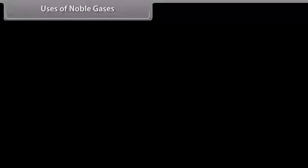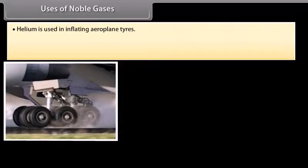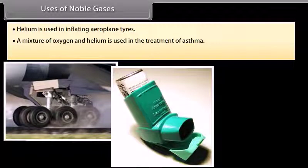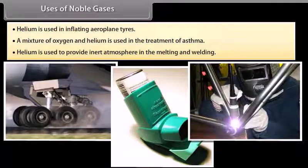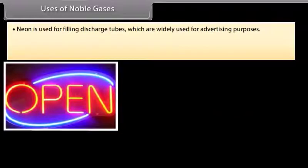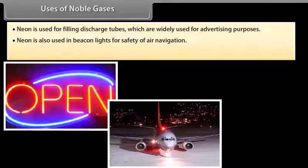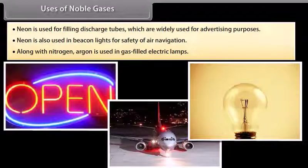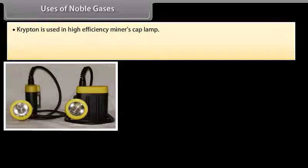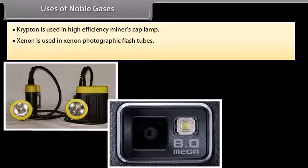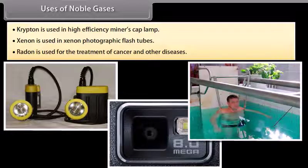Uses of noble gases: Because of the lightness of helium, it is used in inflating aeroplane tyres. A mixture of oxygen and helium is used in the treatment of asthma. Helium is used to provide an inert atmosphere in melting and welding. Neon is used for filling discharge tubes with characteristic colors, widely used for advertising purposes, and in beacon lights for safety of air navigation. Argon, along with nitrogen, is used in gas-filled electric lamps. Krypton is used in high-efficiency lamps. Xenon is used in photographic flash tubes, and radon is used for the treatment of cancer and other diseases.